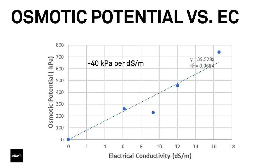We showed earlier that electrical conductivity and salt concentration are linearly related. Here we show that osmotic potential and electrical conductivity are also linearly related. There is a little scatter in this data — measurements of water potential this close to zero are kind of difficult to do — but meter builds and sells the equipment that makes these measurements. The number to remember is minus 40 kilopascals per deci-siemen per meter. That'll be a useful number whenever you want to convert between electrical conductivity and osmotic potential. So a 2.5 deci-siemen per meter solution would have an osmotic potential around minus 100 kilopascals.